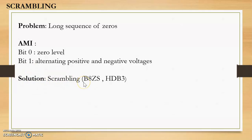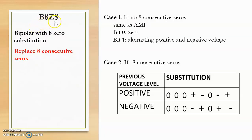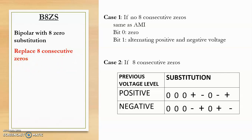There are two scrambling techniques: one is B8ZS and the second is HDB3. In this video we will study B8ZS. B8ZS stands for Bipolar with Eight Zero Substitution. It is used to replace eight consecutive zeros, solving the problem of long sequences of zeros.